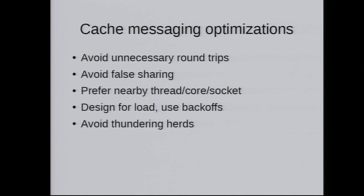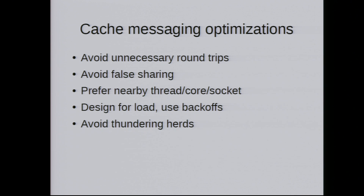Think of bouncing cache lines as a queuing/messaging problem. Some optimizations: avoid unnecessary round trips — just like in network optimization, the number one rule when doing RPC is to avoid unnecessary RPCs. Another basic technique is to avoid false sharing: when multiple independent variables end up on the same 64-byte cache line and they bounce. You find it using the xsnp_hitm event and add some padding — it's pretty easy to fix.